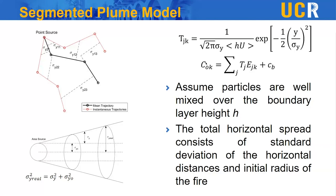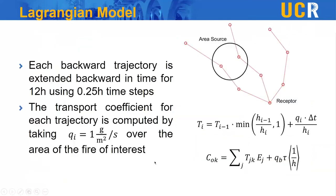The second model was the Lagrangian backward trajectory model — we go from the receptor to the source. Each backward trajectory is extended in time for 12 hours using quarter-hour time steps. The transport coefficient is computed assuming an emission rate of one gram per meter squared over the area of interest. Essentially, instead of going forward, we go backward, and we fit the model to the data.